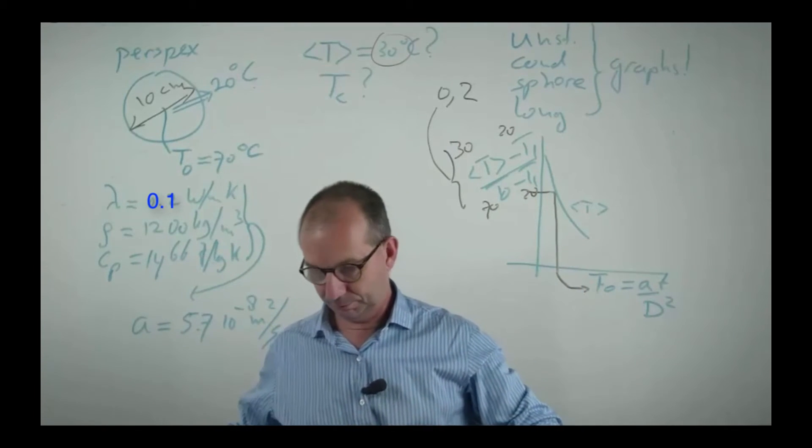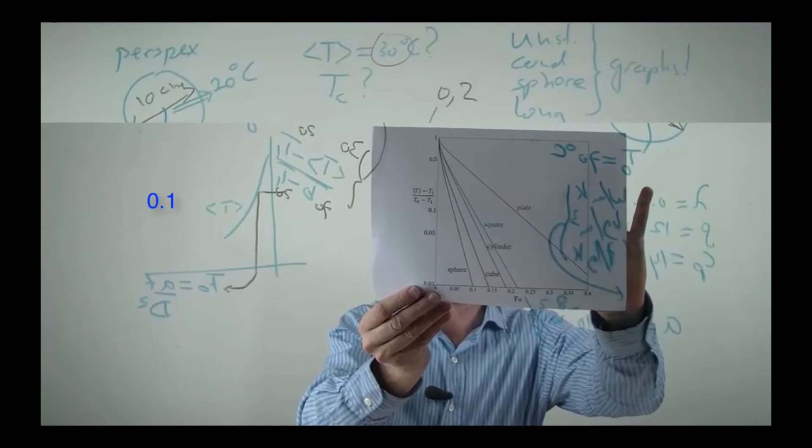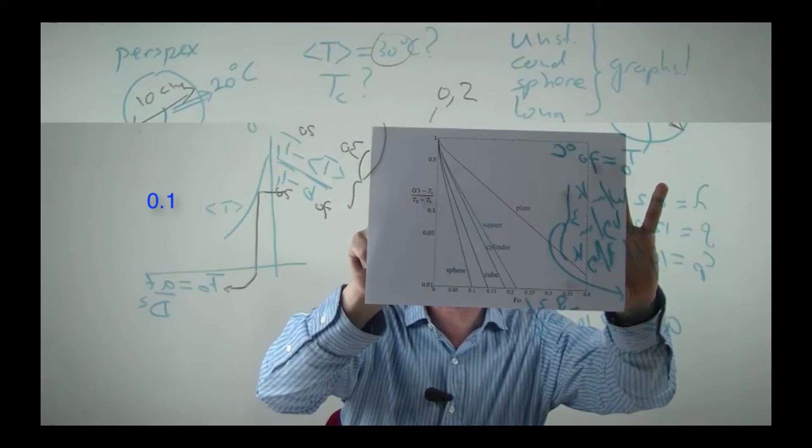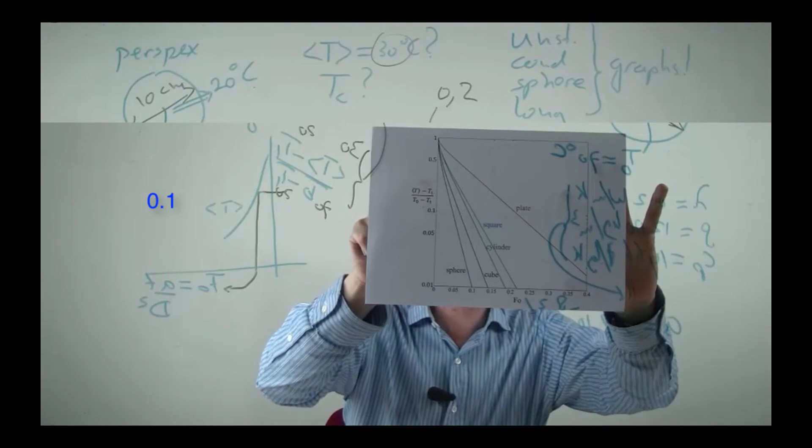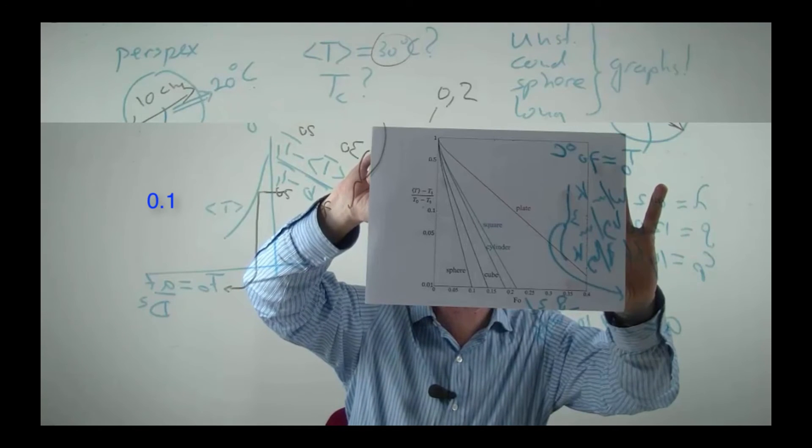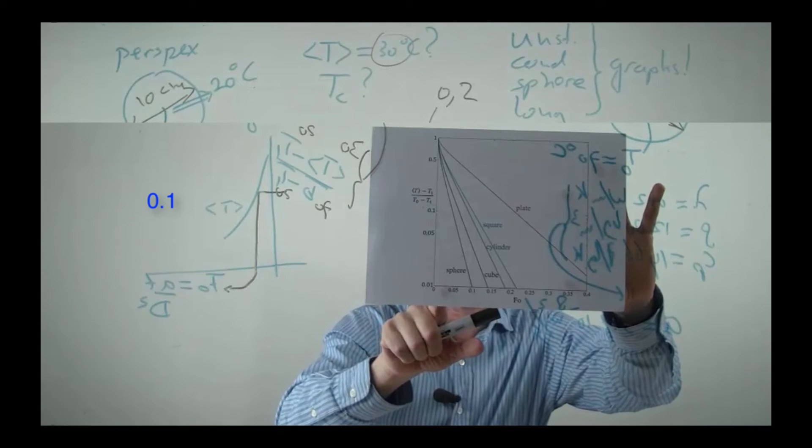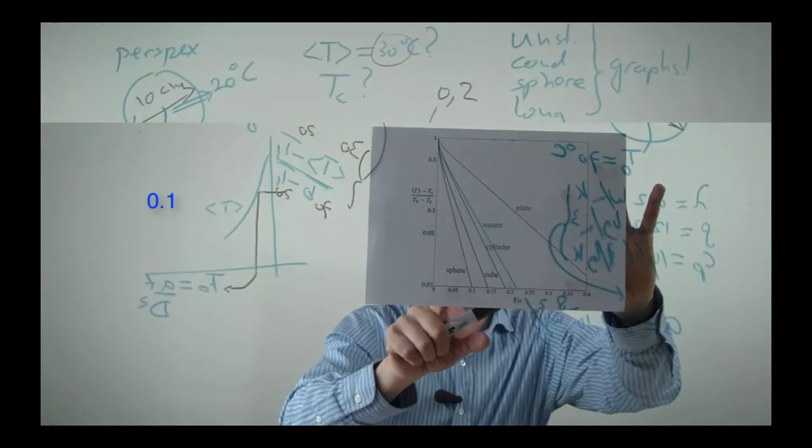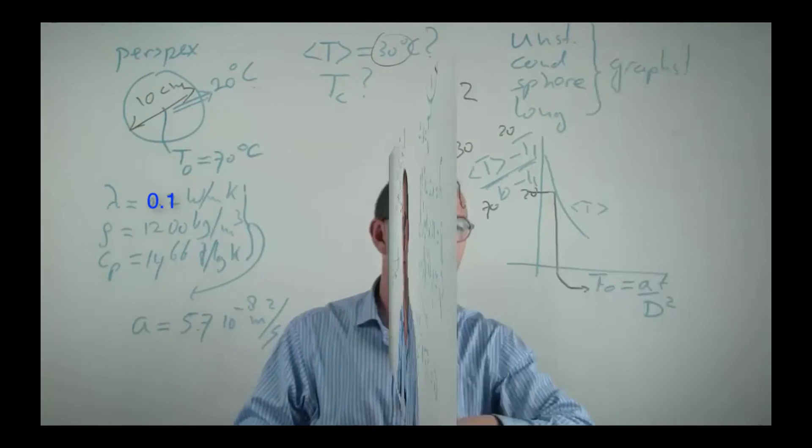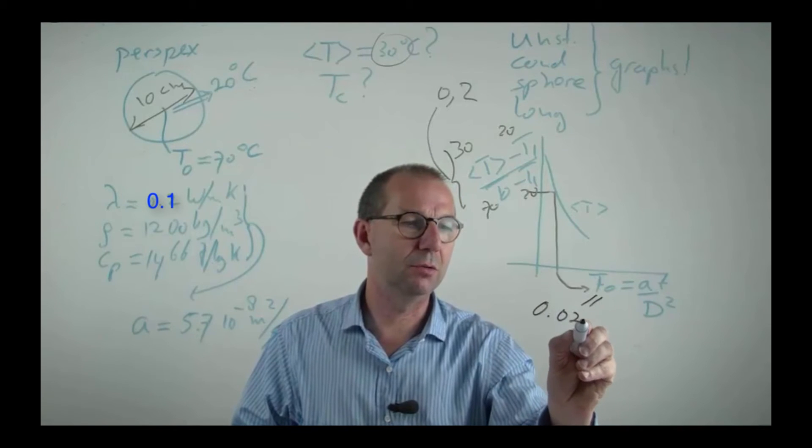So I pick up the graph, here it is. I have computed this number, I read off at a value of 0.2 and I take the line of the sphere, I go down and have a value of 0.025 in the middle of this gap for the Fourier number. So I read off and I get that this is 0.025.